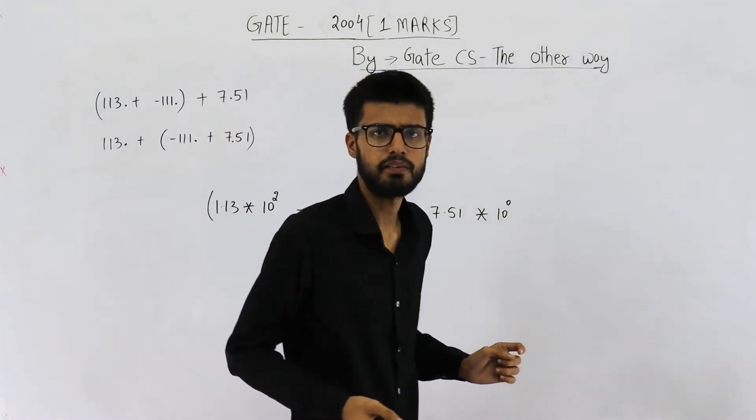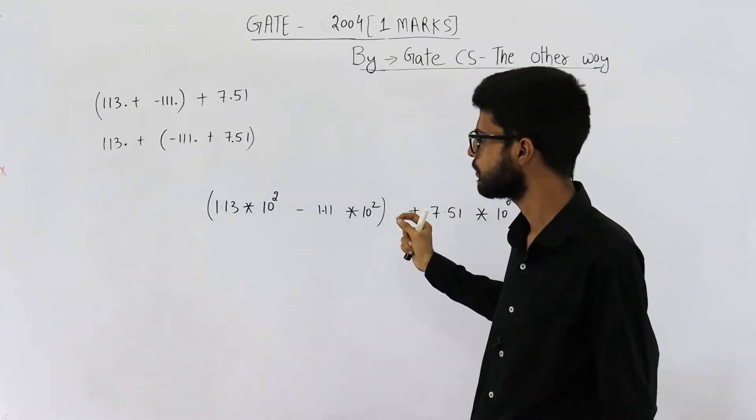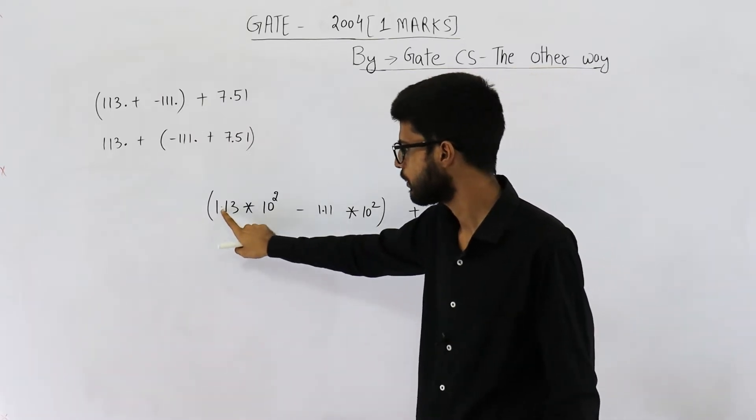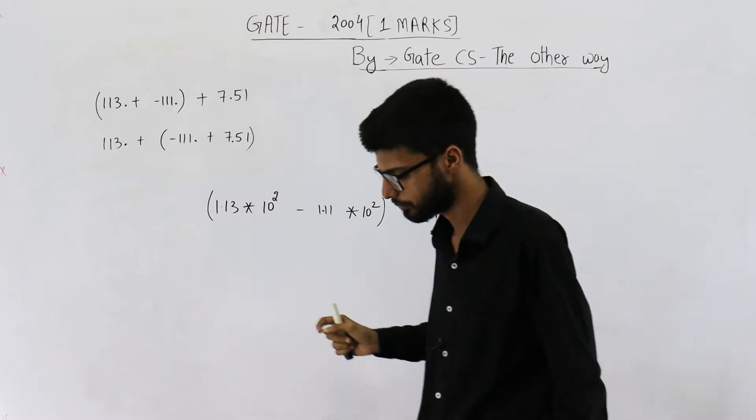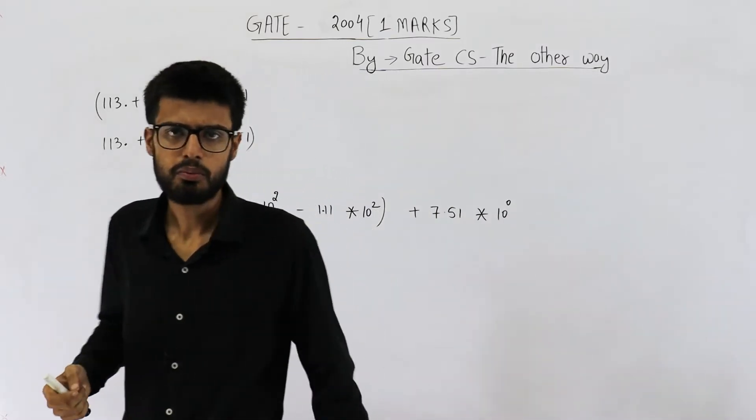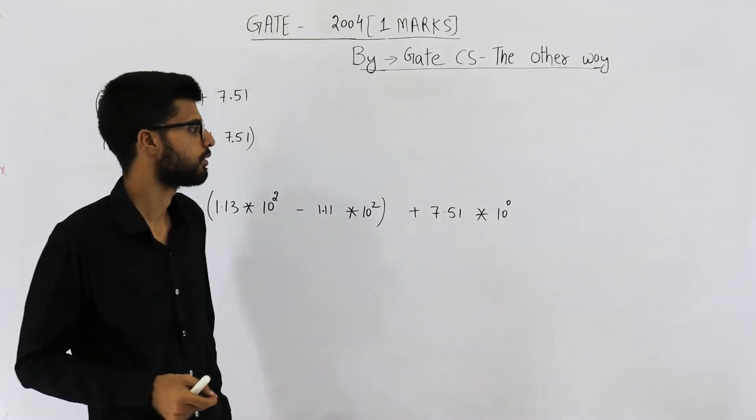You know about that scientific notation. We write a zero point something or one point something. It's a convention that decimal point will be placed after the first digit. In a normal binary number system, also we follow this convention if IEEE standards are used.